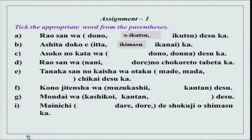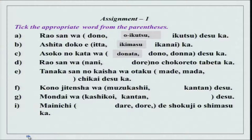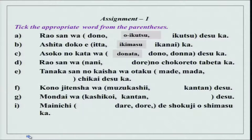The next one is ashita doko e ikimasu ka? Not itta because it is ashita, and not ikanai. Then, asokono kata wa donata desu ka? You could also use dare here, but donata is polite because kata is used. Kata is polite for hito. You could also add sama after donata to make it even more polite and teinei.